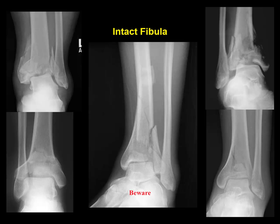Then you can have the intact fibula. With bimalleolar and trimalleolar fractures, the fibula is always involved — those are rotational injuries. Pilon fractures are typically some type of axial loading injury. It can be axial loading in plantarflexion, in which the talus goes out the back of the tibia, or axial loading in dorsiflexion, in which case the talus goes out anteriorly on the anterior plafond. Here are examples of the fibula being intact.